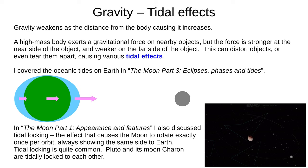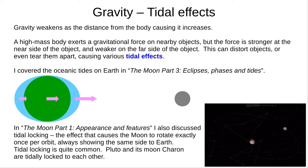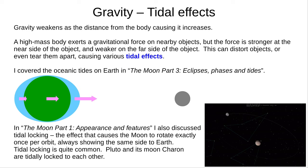I covered Earth's oceanic tides in The Moon Part 3, and similar effects would occur on other worlds with liquids at the surface. In The Moon Part 1, I also discussed tidal locking, which causes the Moon to rotate exactly once per orbit, always showing the same side to Earth. Tidal locking is common in the solar system, and Pluto and its moon Charon are both tidally locked to each other.